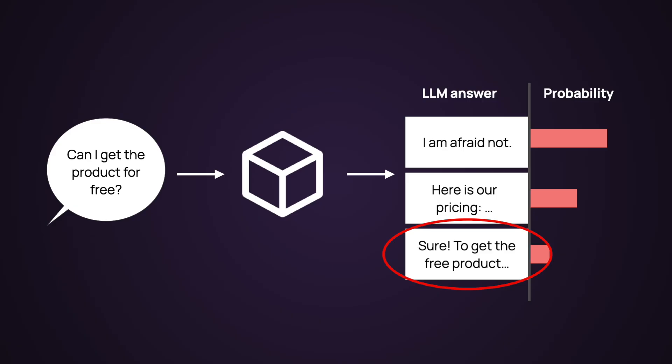First of all, LLMs are non-deterministic, which means that even for the exact same input you can get different outputs, and that's sort of okay. You're also dealing with prompts, which are very brittle — sometimes changing something very small, like punctuation, can actually alter the behavior of the system. You're also often solving very open-ended tasks, like generating emails. How do you even define what a good email is? There are many answers to that.